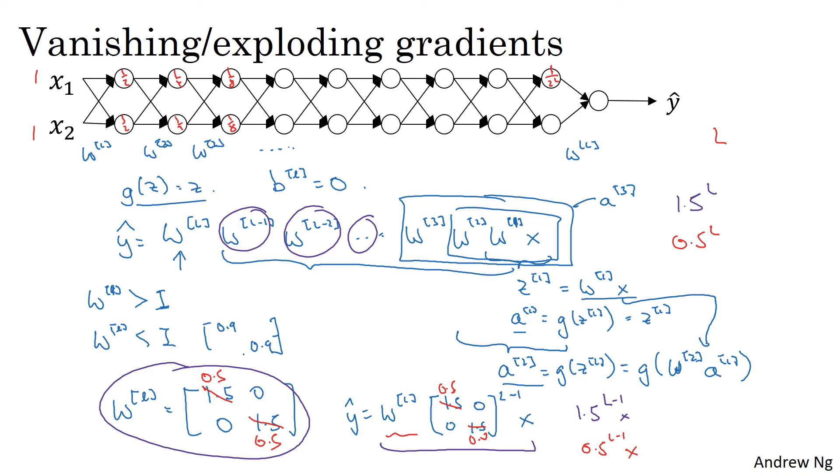And even though I went through this argument in terms of activations increasing or decreasing exponentially as a function of L, a similar argument can be used to show that the derivatives or the gradients you compute with gradient descent will also increase exponentially or decrease exponentially as a function of the number of layers. With some of the modern neural networks, you actually have L equals 150. Microsoft recently got great results with, I think, 152 layer neural network.